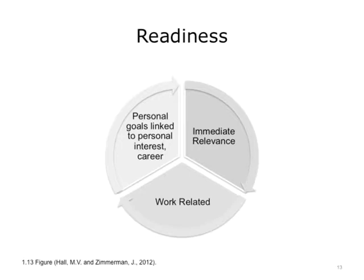Another criteria of adult learners is readiness — the concept that learning needs to be immediately relevant, not something they may use in the future. This often means it's work-related or specific to their job, but it can also relate to personal goals, interests, and career. Regarding training for the implementation of electronic health records, most of the time it will be work-related, so this will be an easy one to overcome.